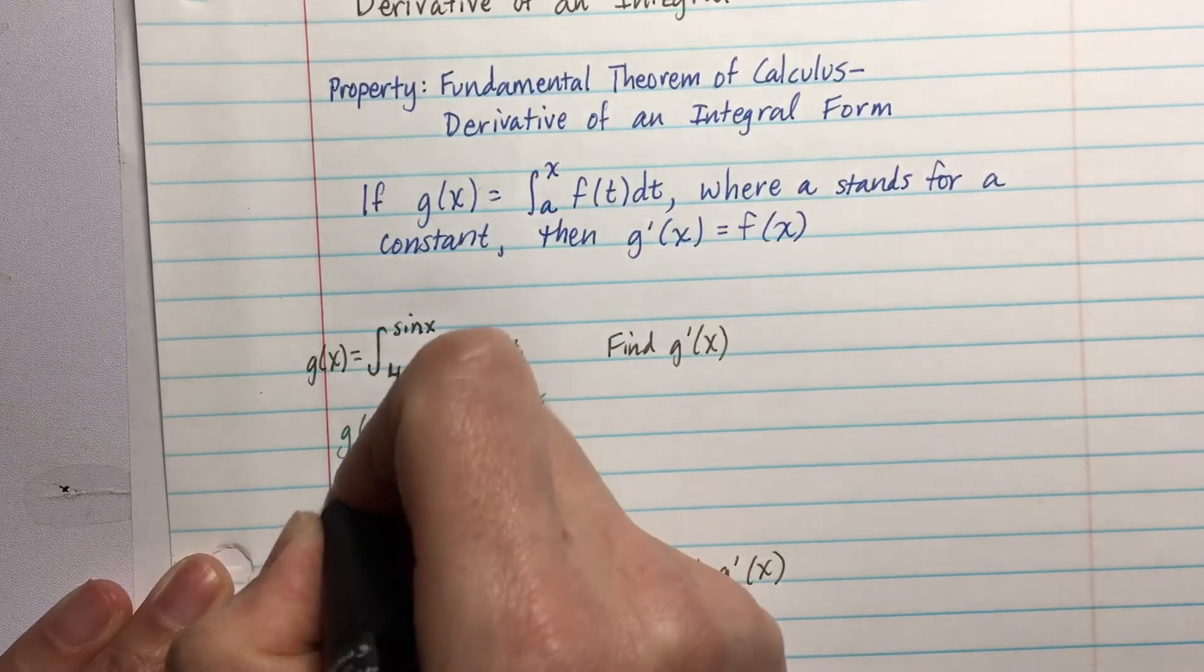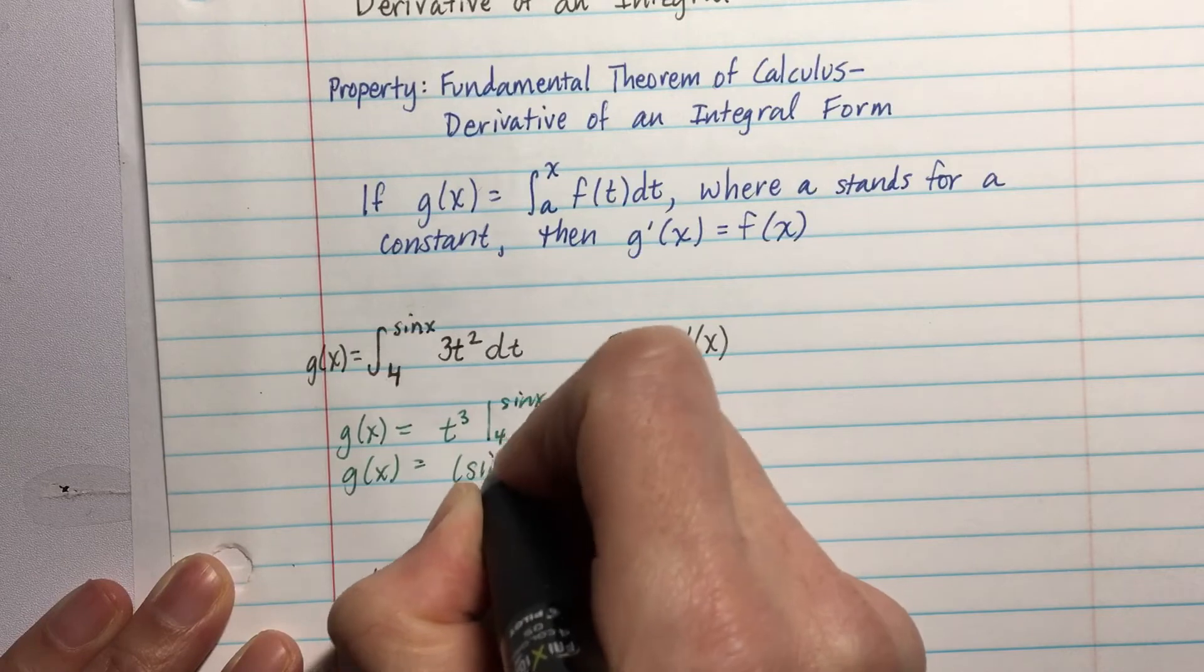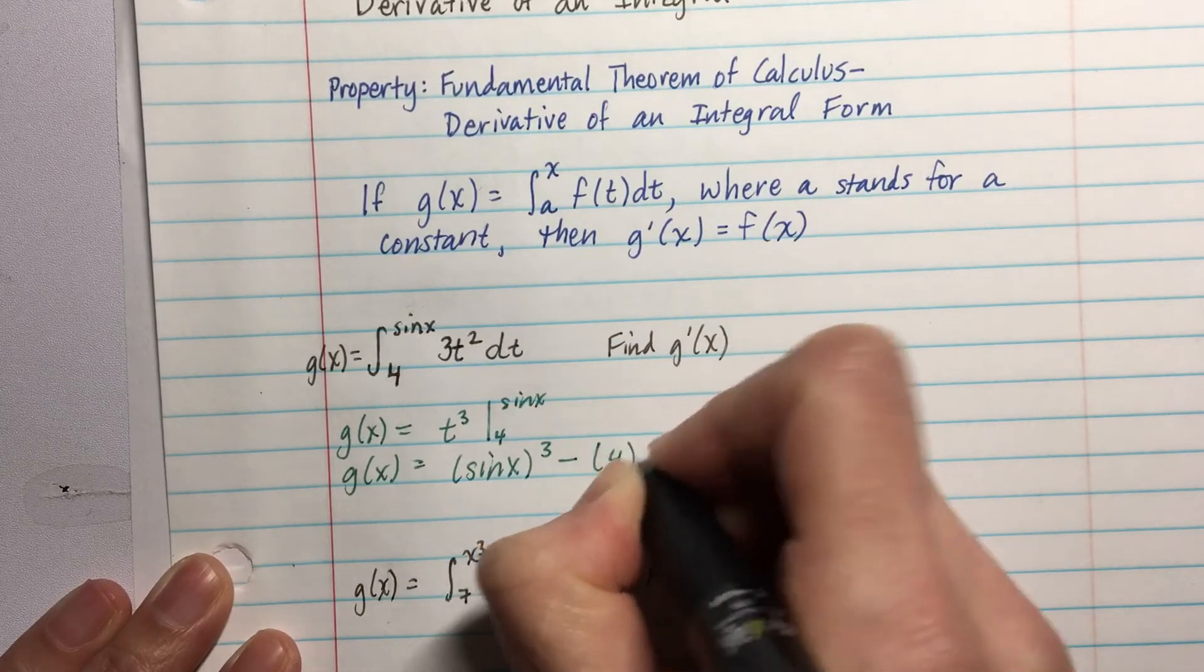So g(x) then is plugging in sin(x). So I have sin(x) getting cubed minus 4 getting cubed.